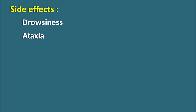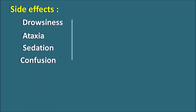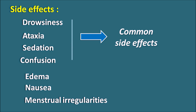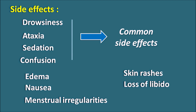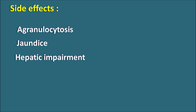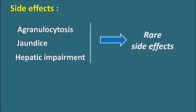The main side effects are related to central actions: drowsiness, ataxia, loss of balance, sedation, and confusion — common with many benzodiazepines. Apart from these, the drug can also produce edema, nausea, menstrual irregularities, skin rashes, loss of libido, and extrapyramidal side effects. Rare but severe side effects observed with long-term treatment include agranulocytosis, jaundice, and hepatic impairment. Because these are harmful, they should be carefully monitored, and the drug should be immediately stopped if they are observed.